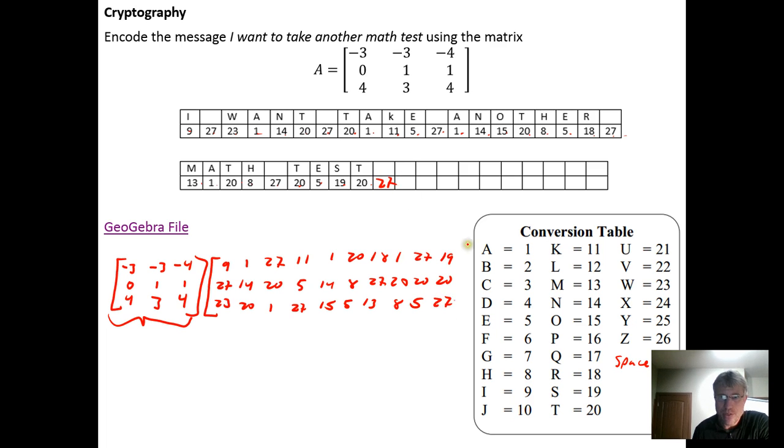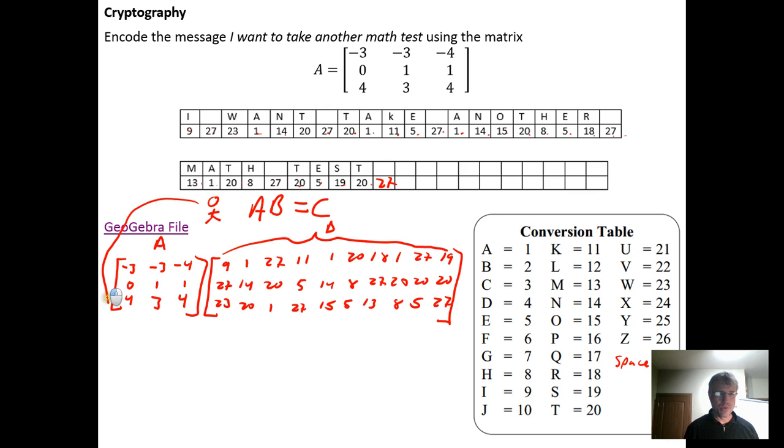The idea is you take the product of these two matrices. You go A, the encoding matrix, times B, which is the matrix you want to encode. You take the product of these matrices and you generate a matrix C. Then you send this matrix C to some other person.